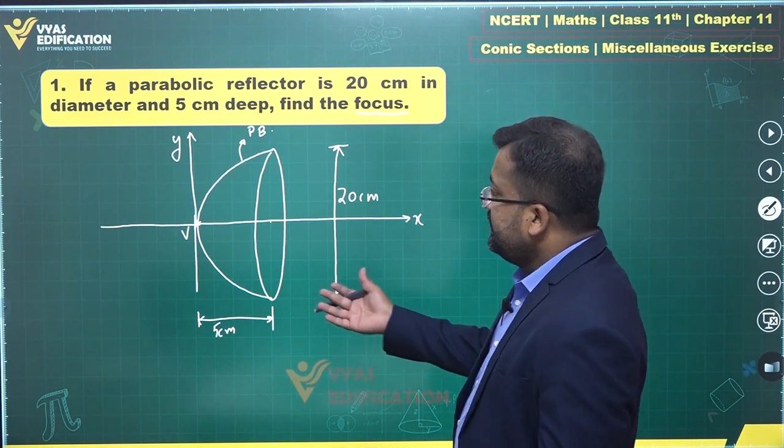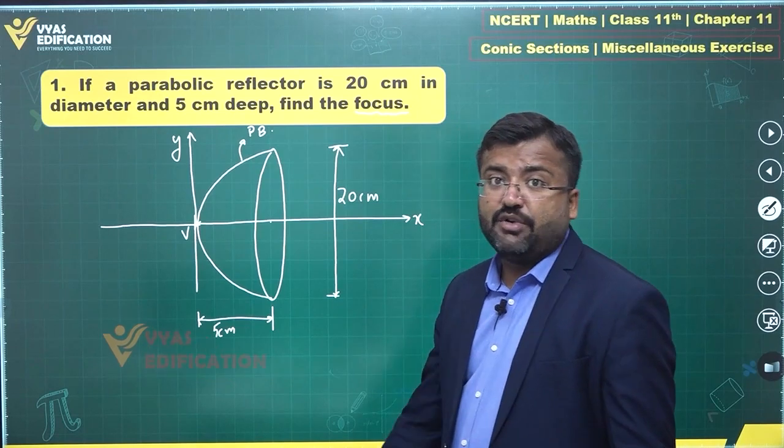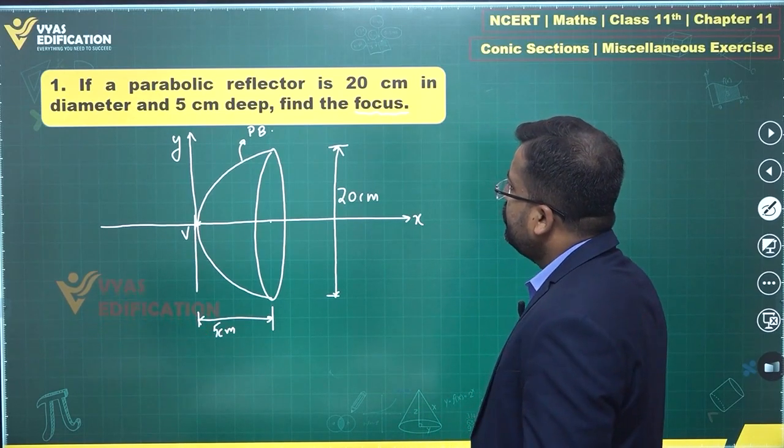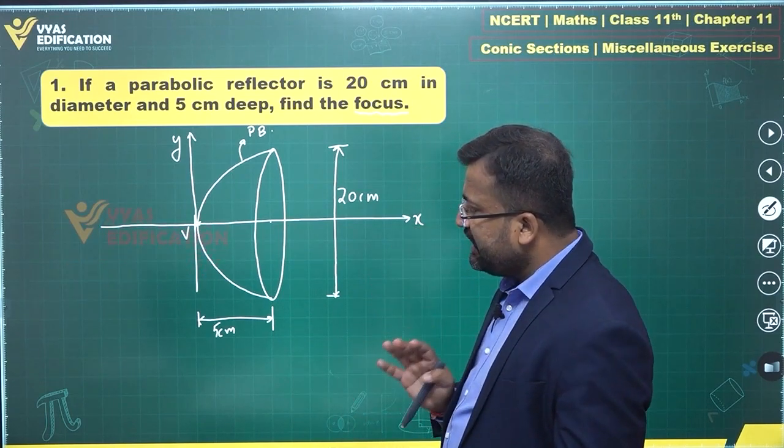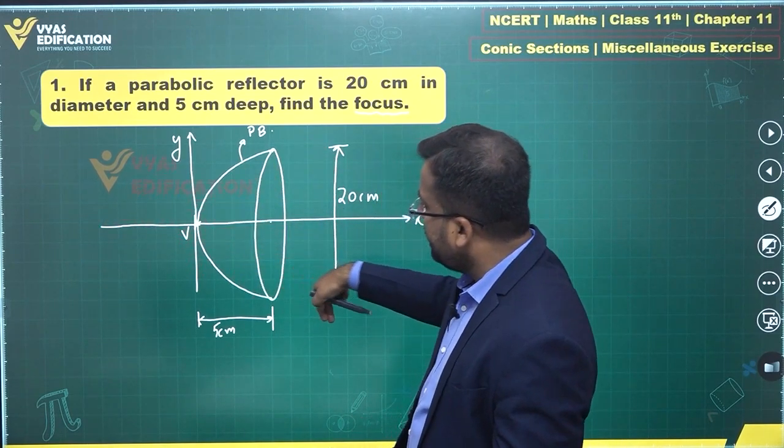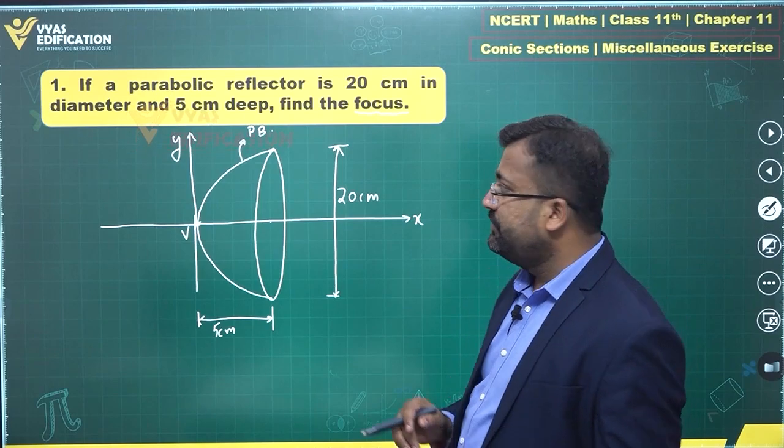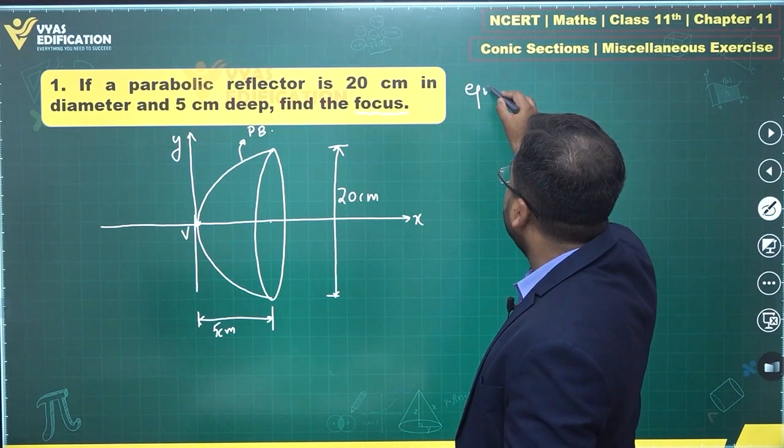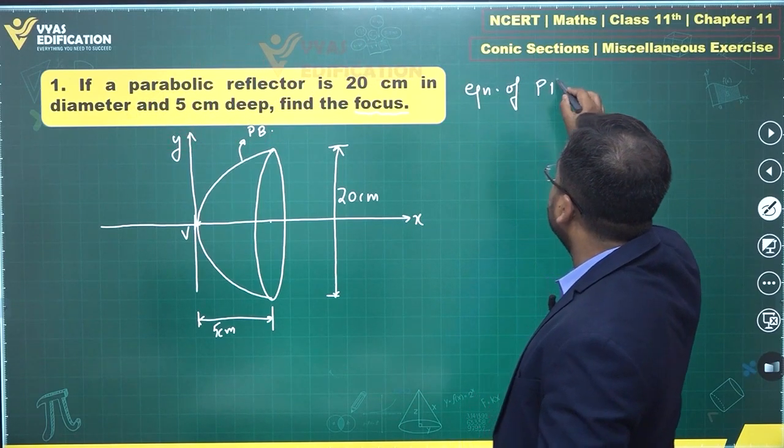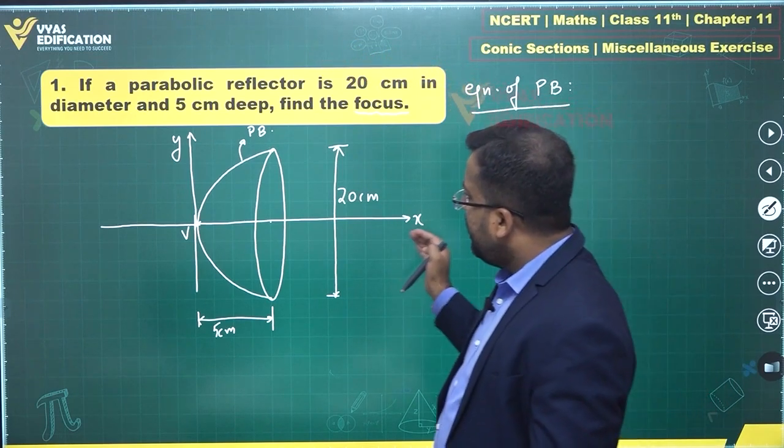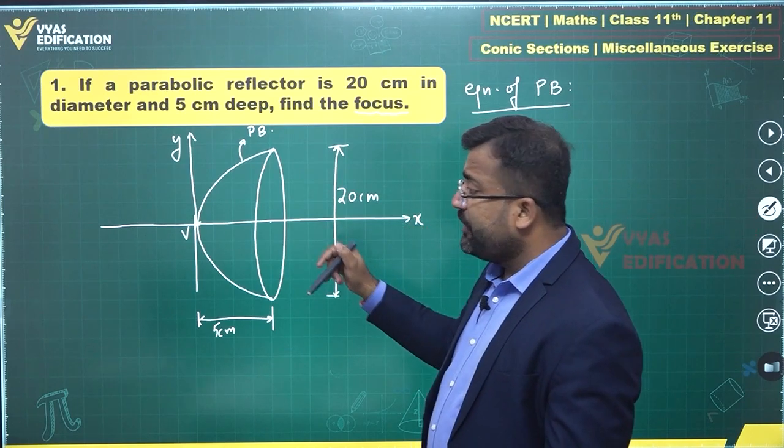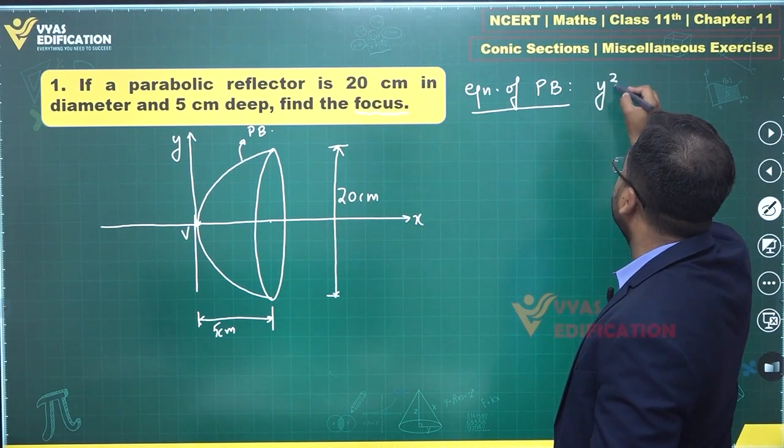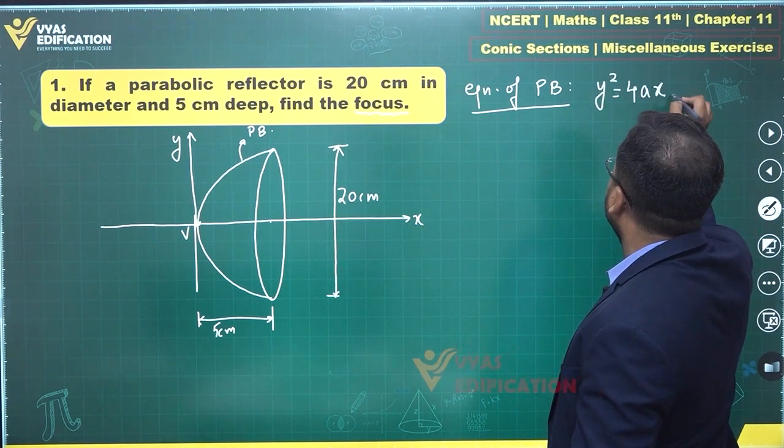We have drawn this x-axis and y-axis in such a manner that the vertex lies at this particular point. So, what do we have for this parabolic shape? The first and foremost thing that you identify is for this parabolic shape, the equation of the curve, equation of parabola will be, do you observe, this looks like a standard form? Opening rightwards along the x-axis, the equation will be y² = 4ax.